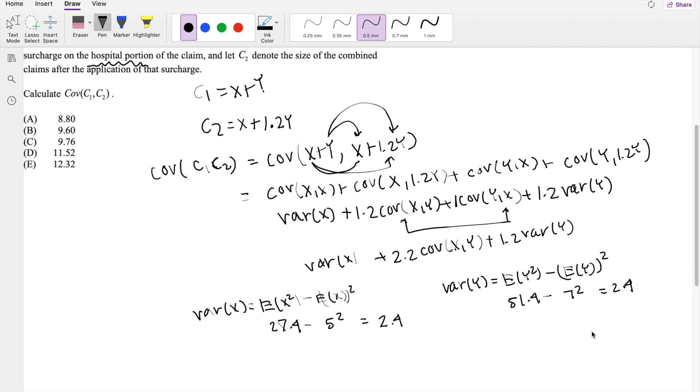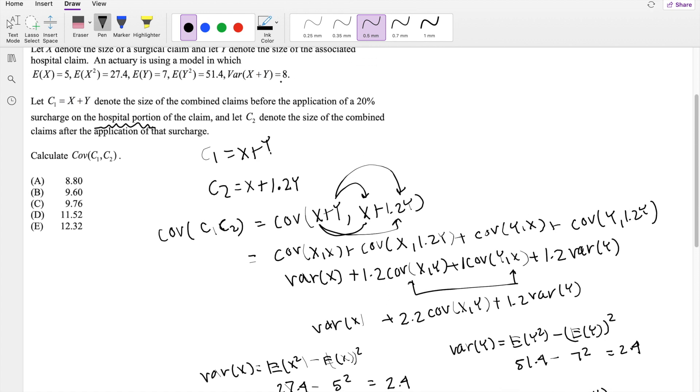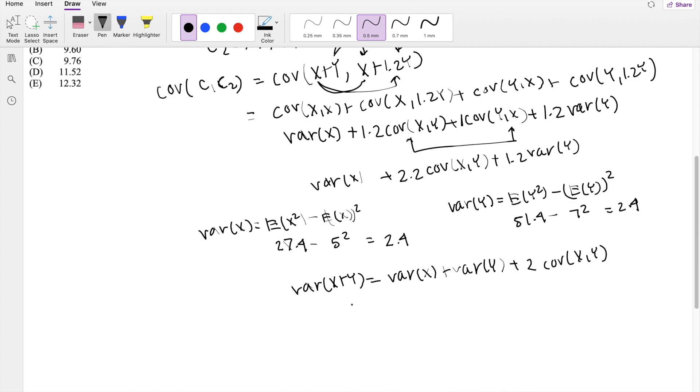And then all we need is a covariance of X and Y. We don't know what covariance of X and Y is, but we do know this formula. Variance of X plus Y is equal to the variance of X plus the variance of Y plus 2 times the covariance of X and Y. If we know that variance of X plus Y is equal to 8, we basically have all the ingredients we need.